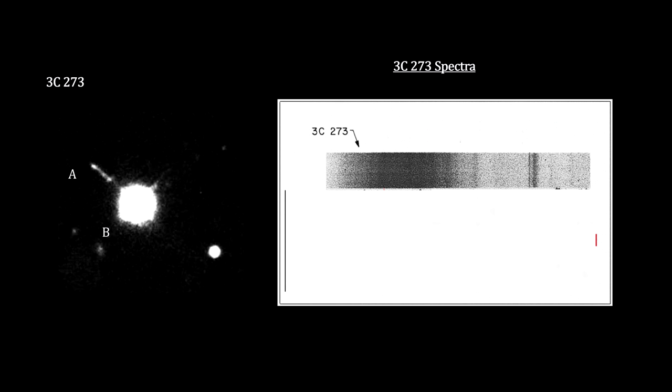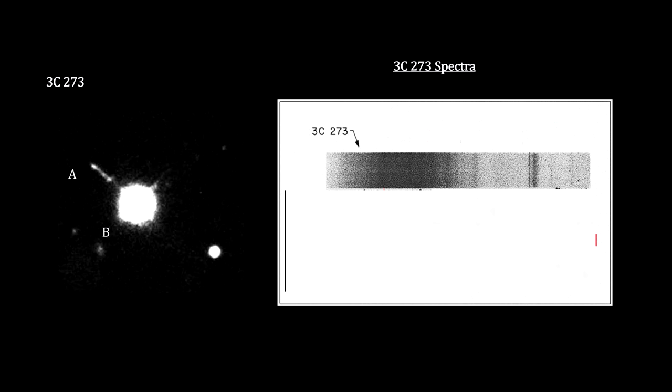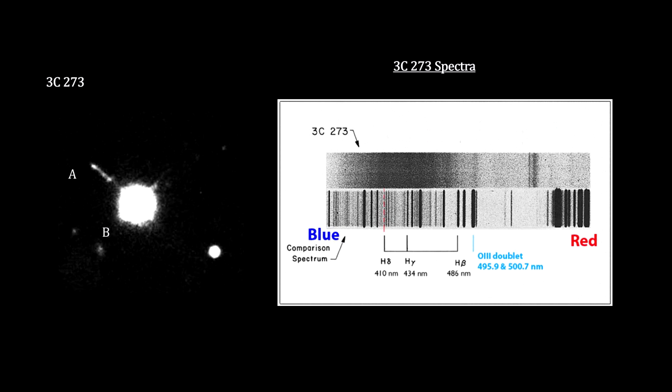In December 1962, the accurate position of 3C273 obtained by Hazard was passed on to Caltech astronomer Martin Schmidt. Using the 200-inch Mount Palomar telescope, Schmidt obtained an image and spectra of the source.